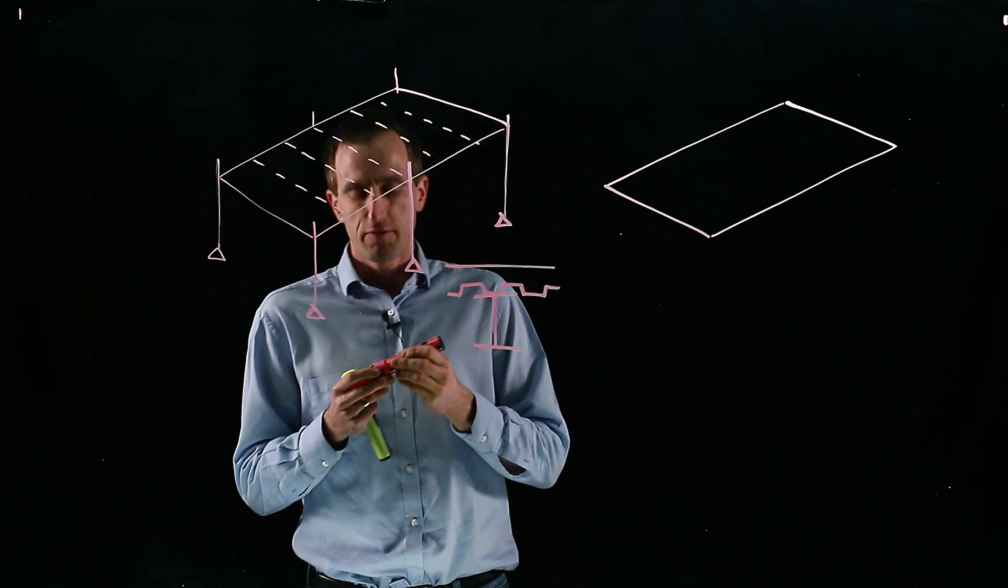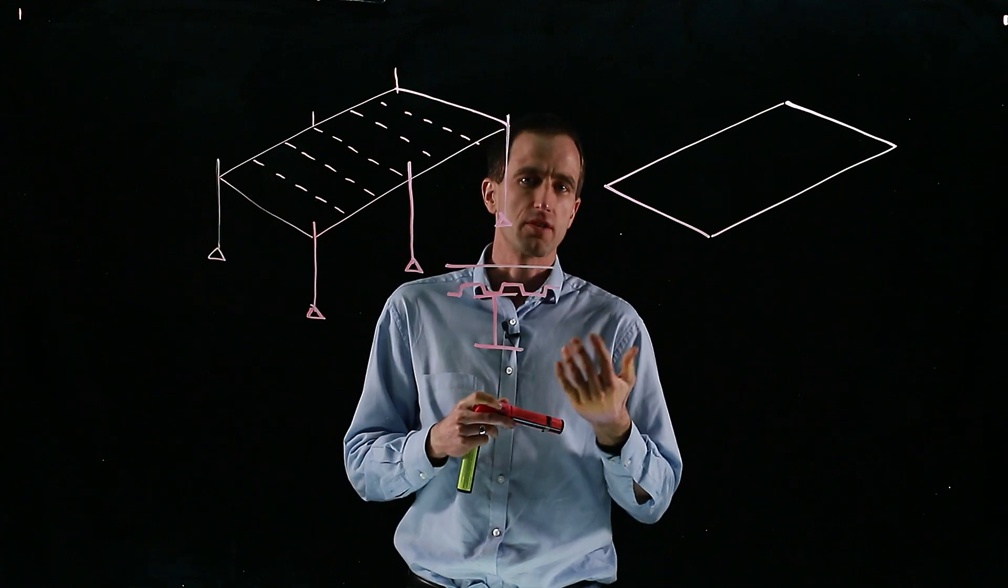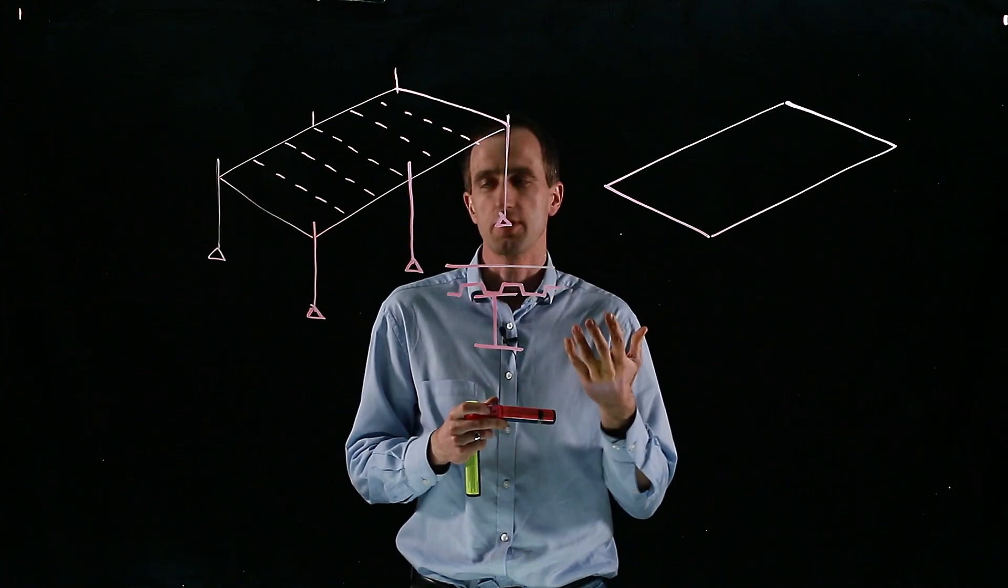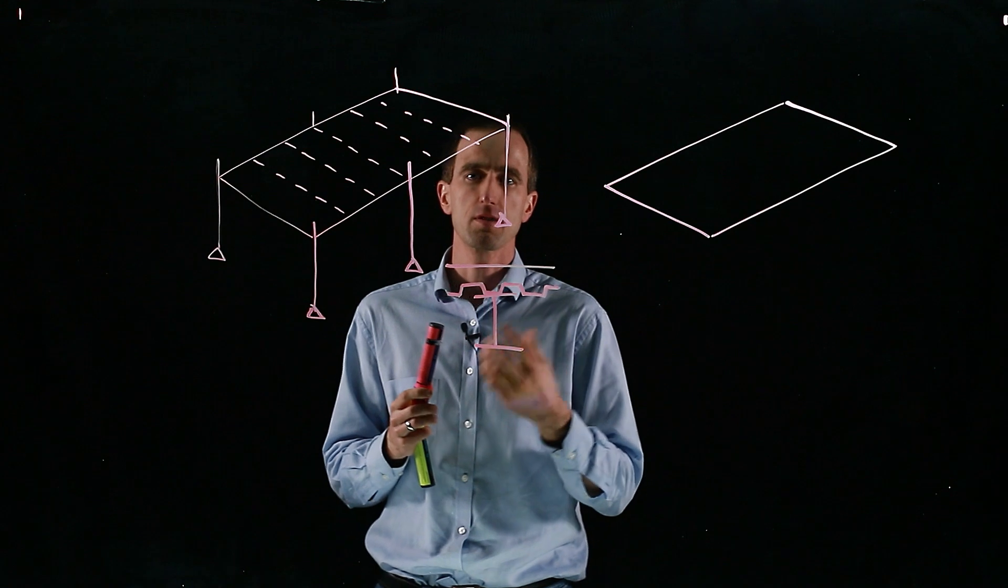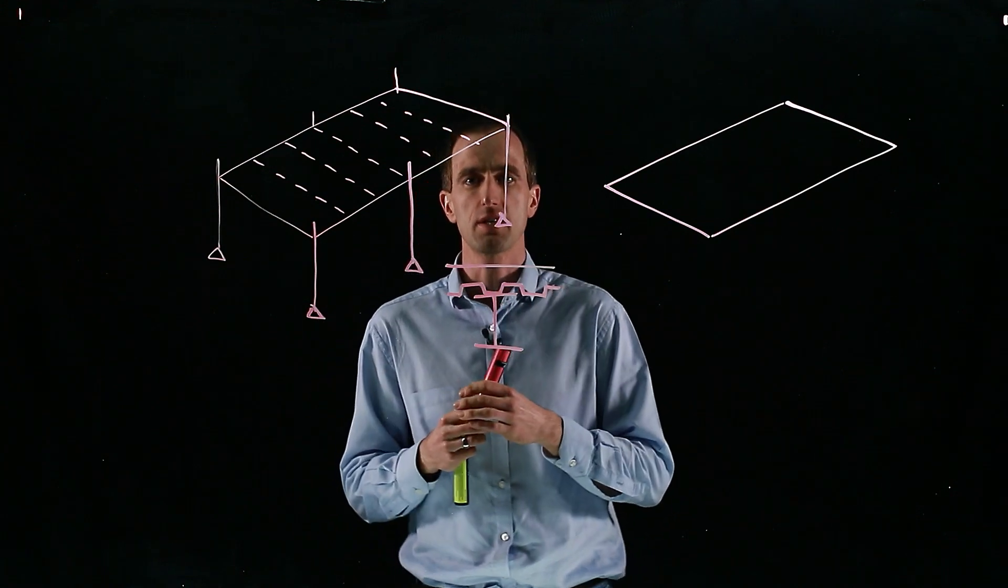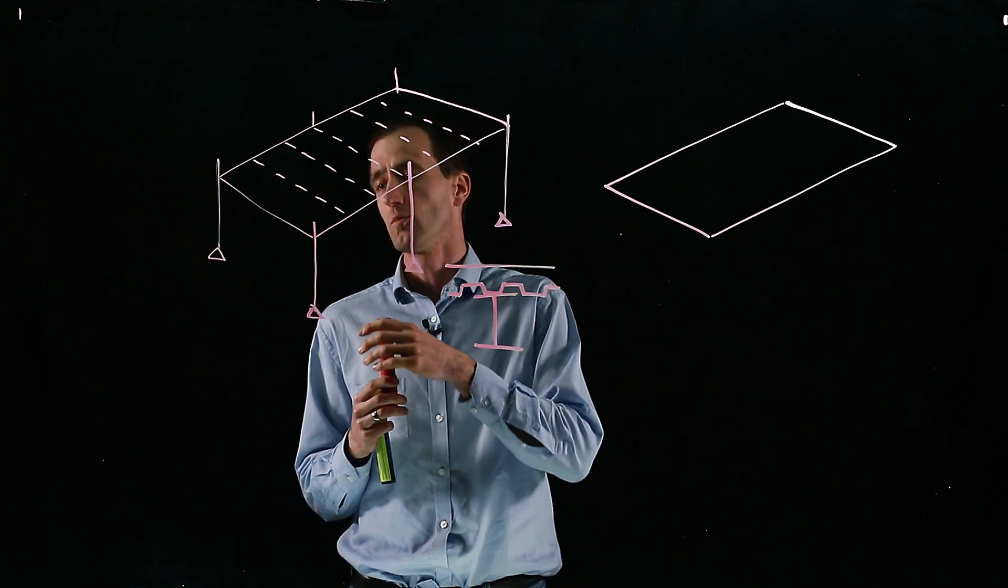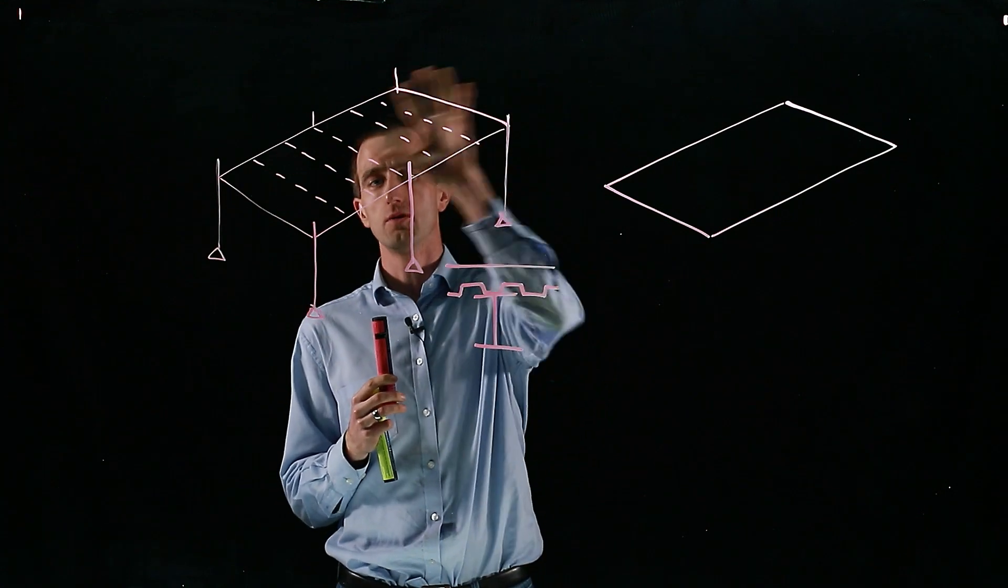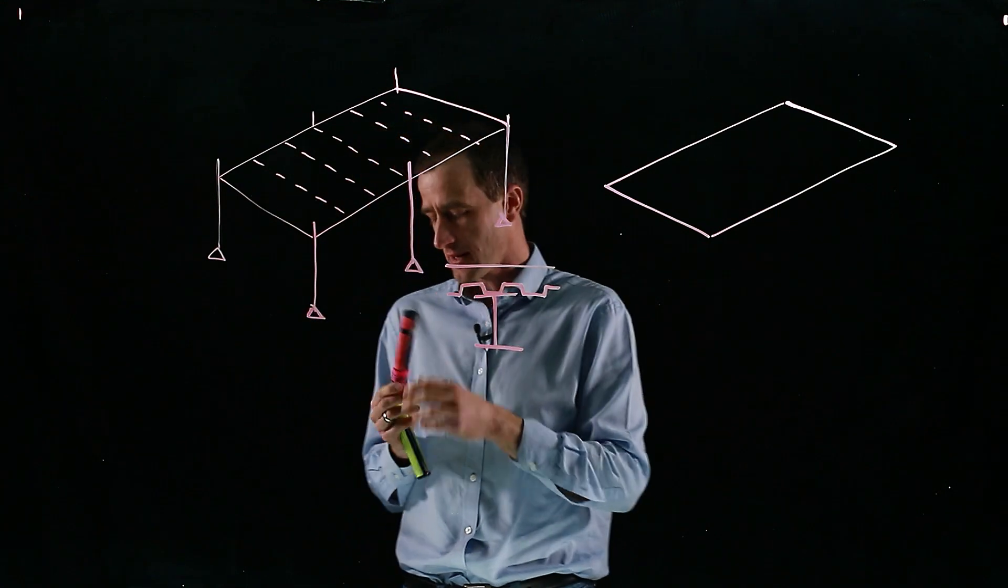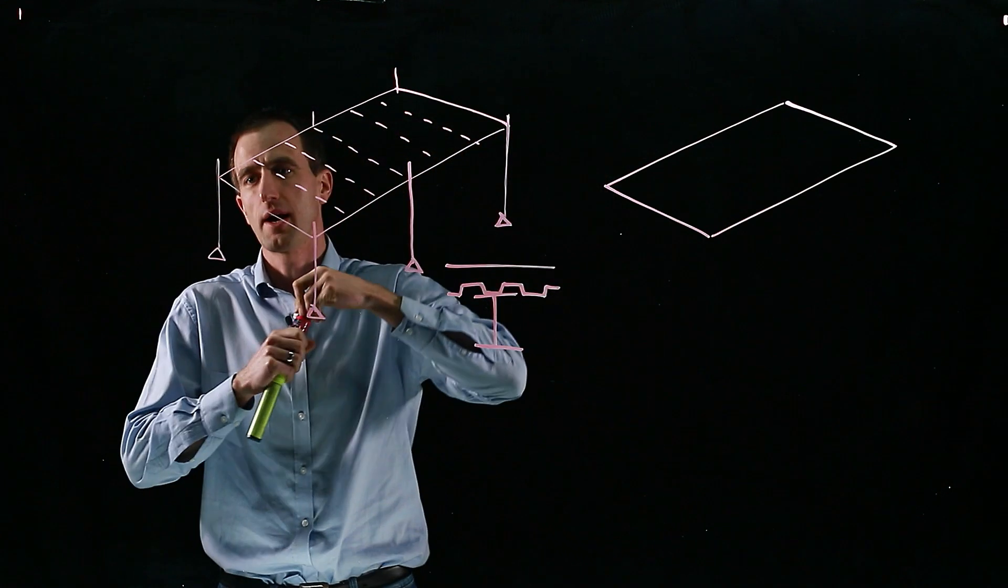If we want to save money on passive protection for steelwork, because passive protection can get very expensive, there are various models based upon full-scale tests on structures and smaller-scale tests. What we need to do is take our whole structural frame and isolate out our primary members.